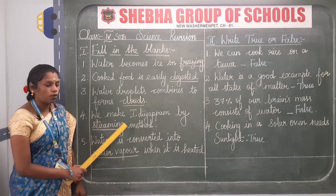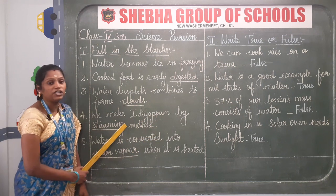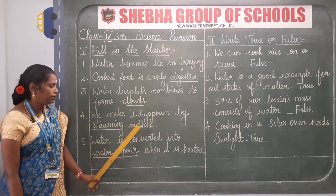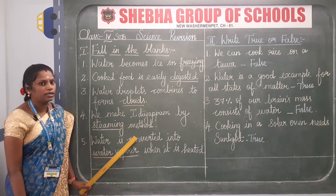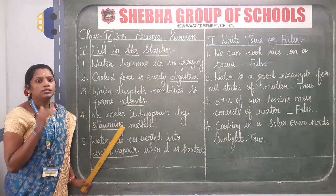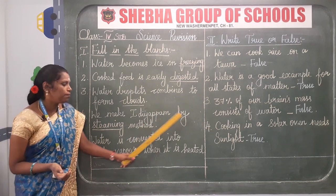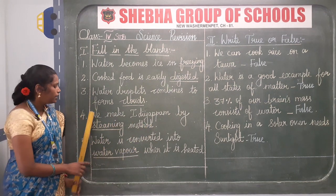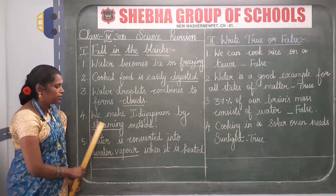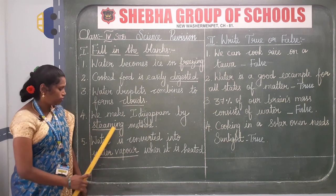Leave one line and write the fourth one. We make idli by blank method. Idli is made by the steaming method — we steam it. We make idli by steaming method. S-T-E-A-M-I-N-G. After finishing the answer, underline it.